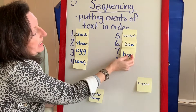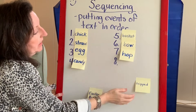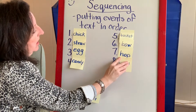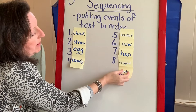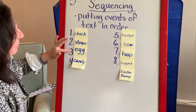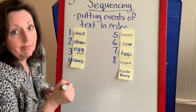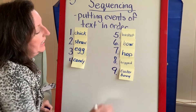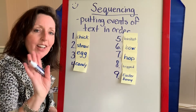She started hopping, didn't she? And after she started hopping, then she tripped. And now she met the Easter bunny. One, two, three, four, five, six, seven, eight — I needed one more, didn't I? See, teachers make mistakes even on video. There were nine major events. Easter bunny. So I hope you enjoyed our sequencing activity. Have a great day.